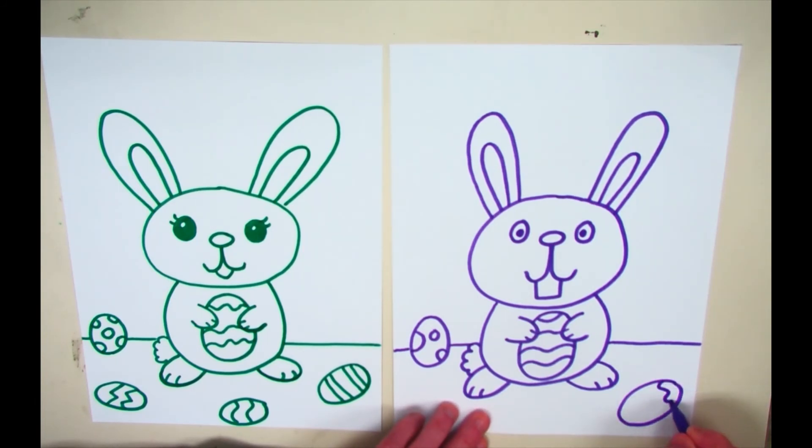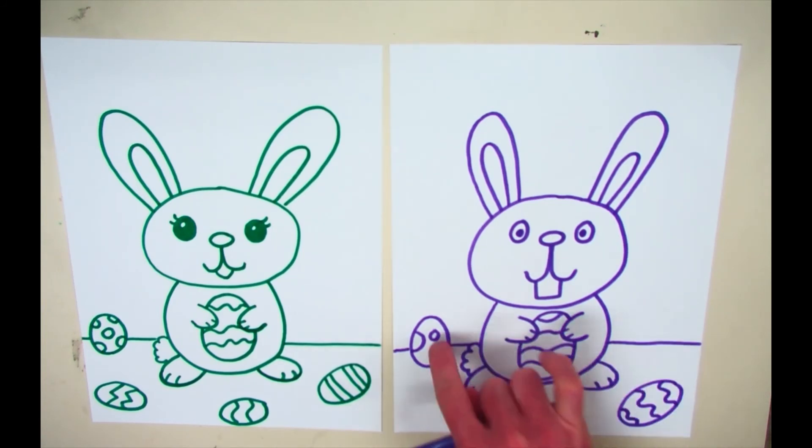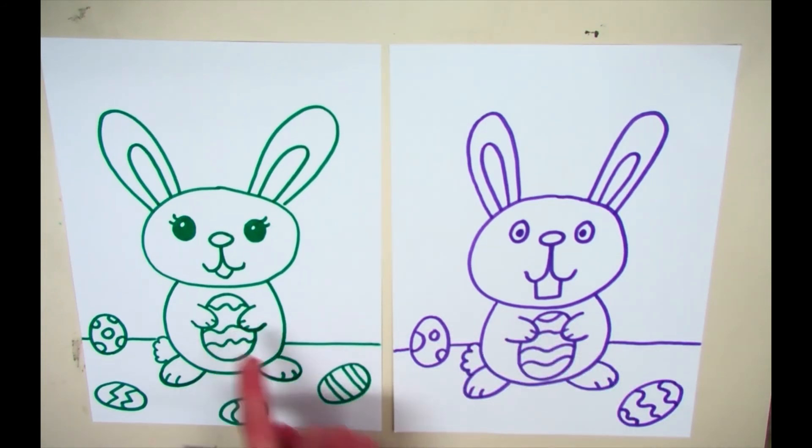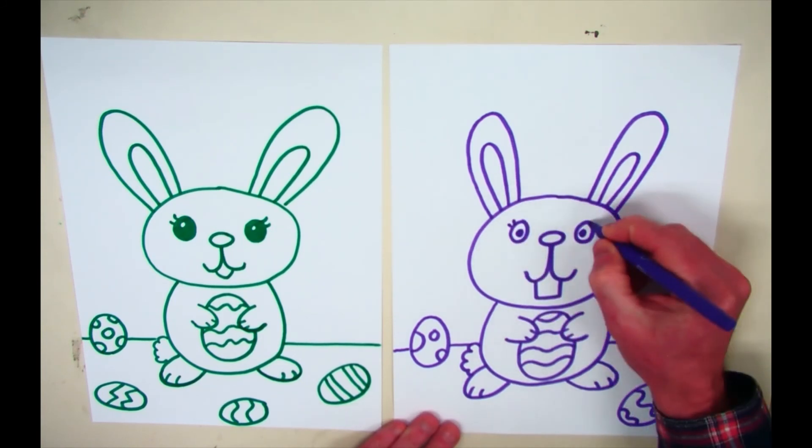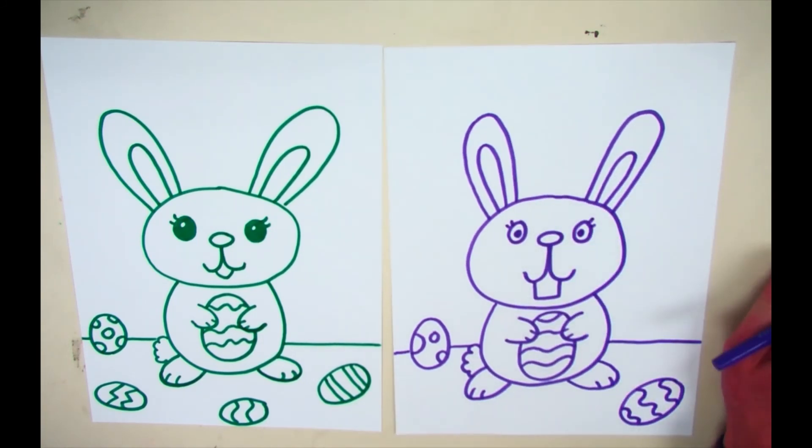And then you can draw in as many eggs as your paper can fit. And if you only want a couple, that's fine. Some people might only put one or two. So he has one, two, three eggs. This one has one, two, three, four, five eggs. You can choose how you want to do yours. Again, there's lots of ways that you can make yours different than mine.